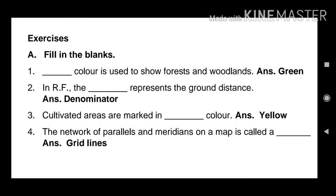Cultivated areas are marked in dash colour. Answer. Yellow. The network of parallels and meridians on a map is called a dash. Answer. Gridlines.